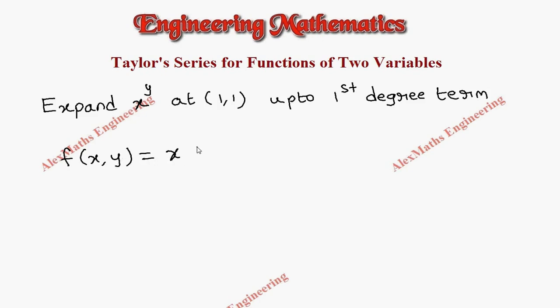which is x^y. Now the value of a is 1 and b is 1 from the given point. So f(1,1) will be 1^1 which is 1. Now I need fx, that is